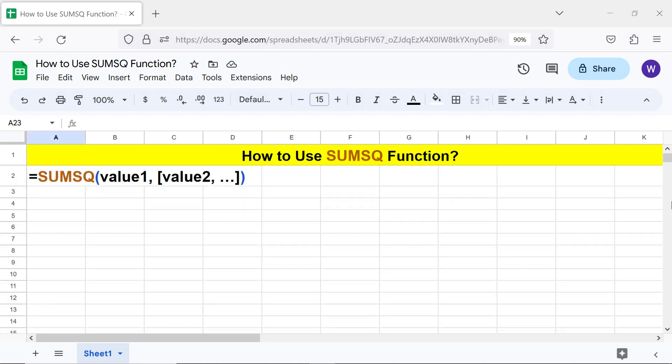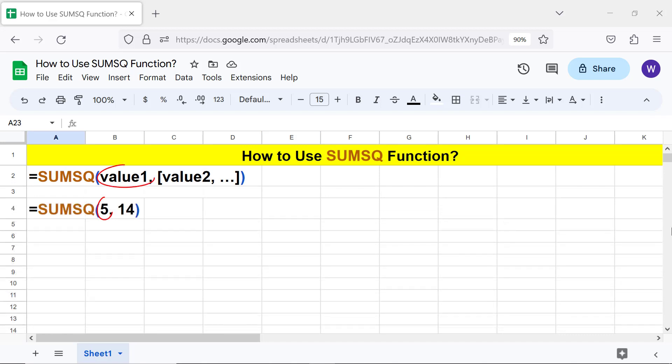Here's the SUMSQ function formula. Let's look at an example. Value 1 is the first number to square. Value 2 and others are optional and are the second and other numbers to square and add to value 1.